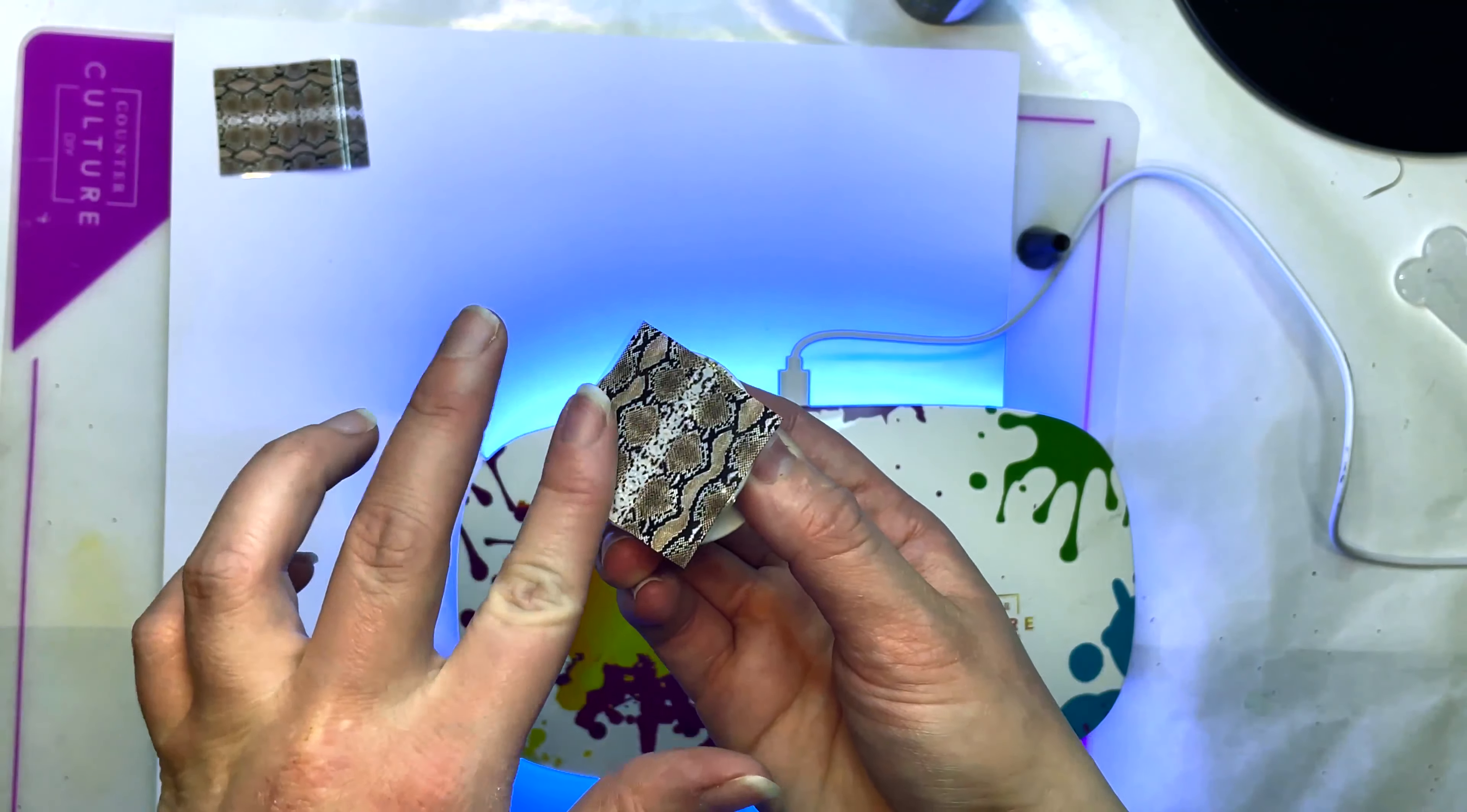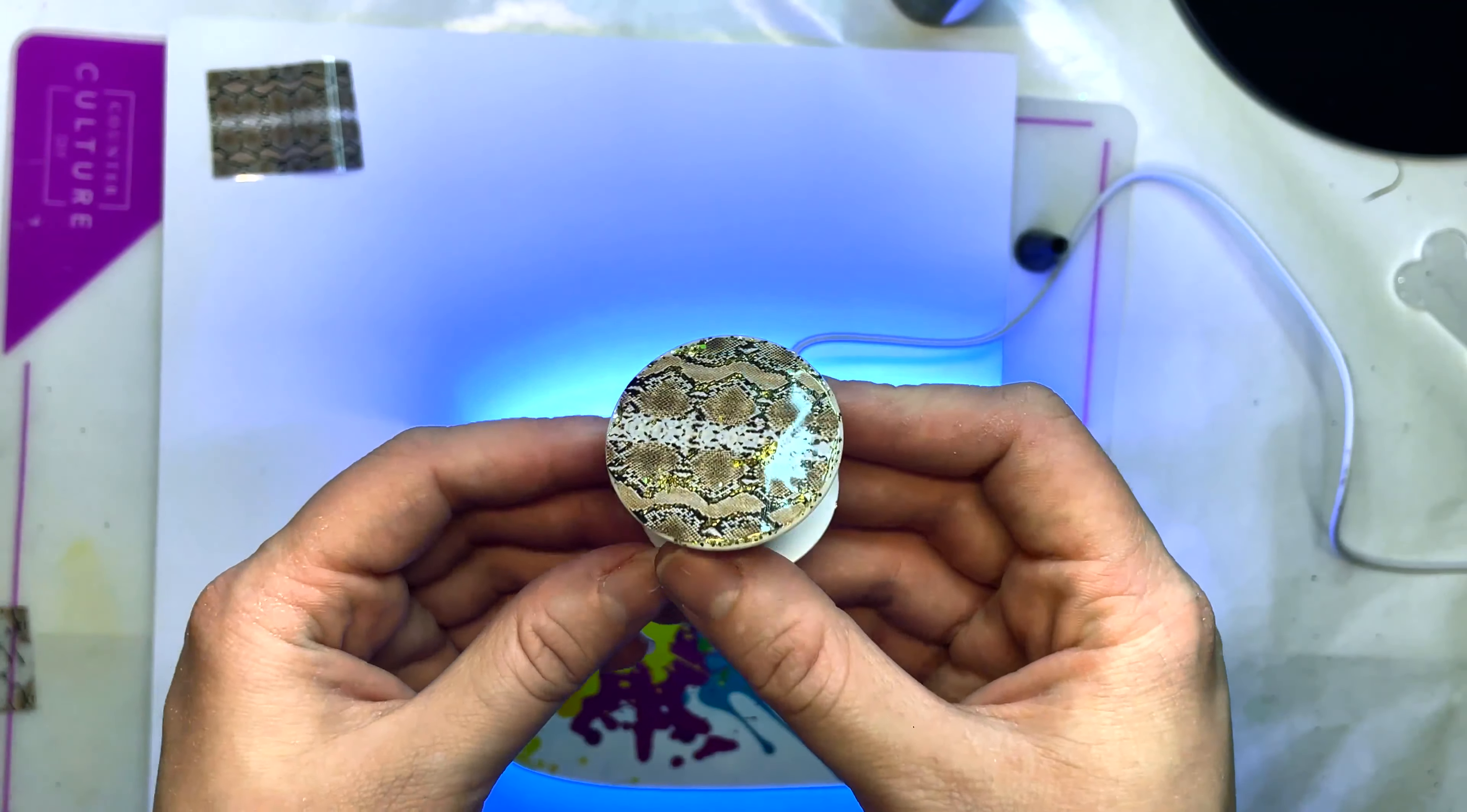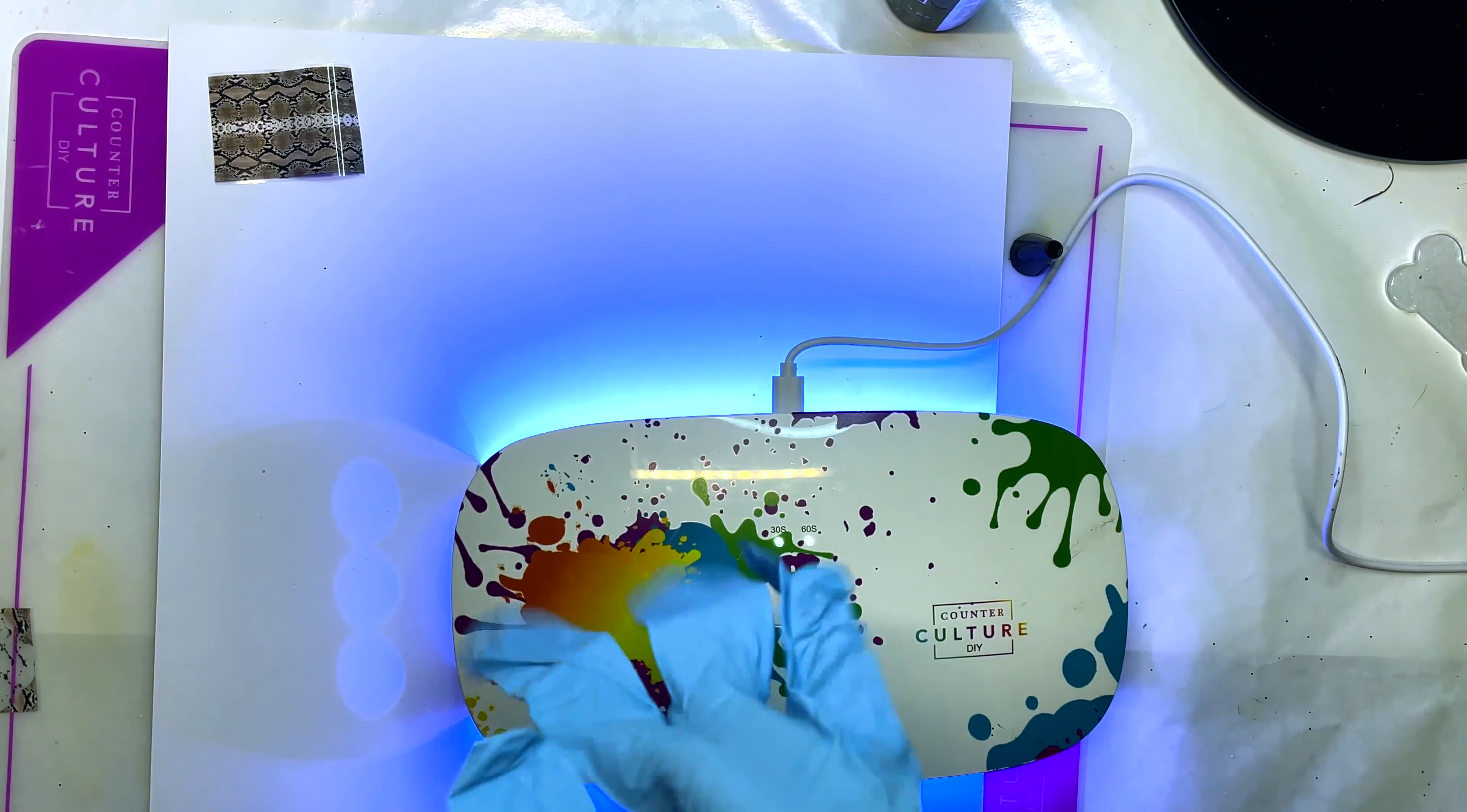I'm going to take the phone grip out, keep holding this one on there, and rub this down really really well. Now we're going to peel this off. You can see the backing came directly off. Look at that—you have this really cool snakeskin looking phone grip.